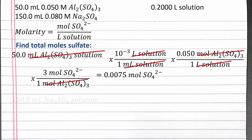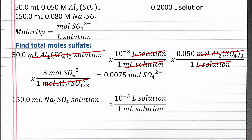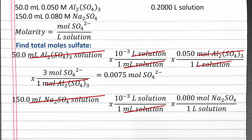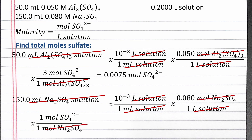Next, we convert 150 milliliters of sodium sulfate solution to moles of sulfate ions. We convert from milliliters to liters first using our prefix multiplier. Then we use the molarity of sodium sulfate to convert from liters of solution to moles of sodium sulfate. Then we use the chemical formula to convert from moles of sodium sulfate to moles of sulfate — one mole of sulfate for every mole of sodium sulfate. Completing the calculation, we get 0.012 moles of sulfate from the sodium sulfate solution.